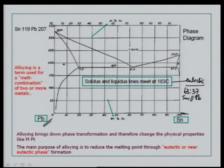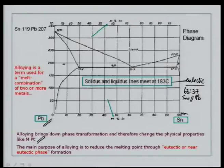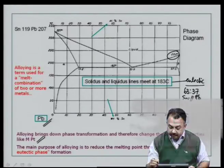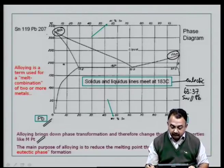What does alloying do? Alloying brings down phase transformation and therefore changes physical properties like melting point, which is exactly what we achieve by mixing lead with tin. The purpose of adding lead to tin is to reduce the melting point, because individually the melting points of tin and lead are very high. The main purpose of alloying is to reduce the melting point through eutectic or near-eutectic phase formation. If you look at this diagram, here you see the melting point of tin, and here you can see 327°C as the melting point of lead.